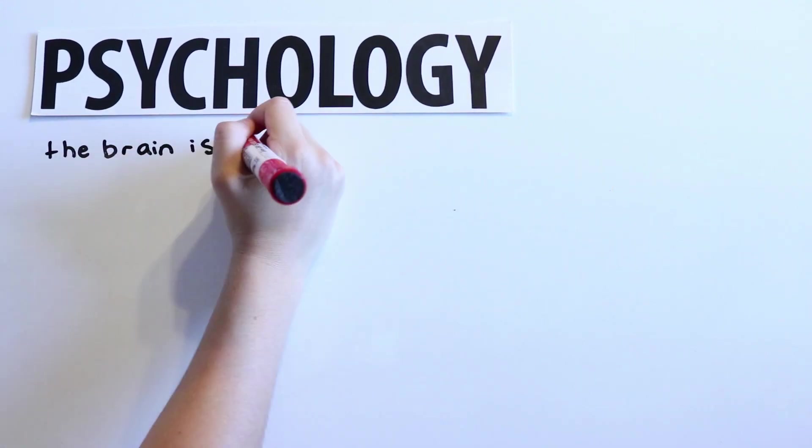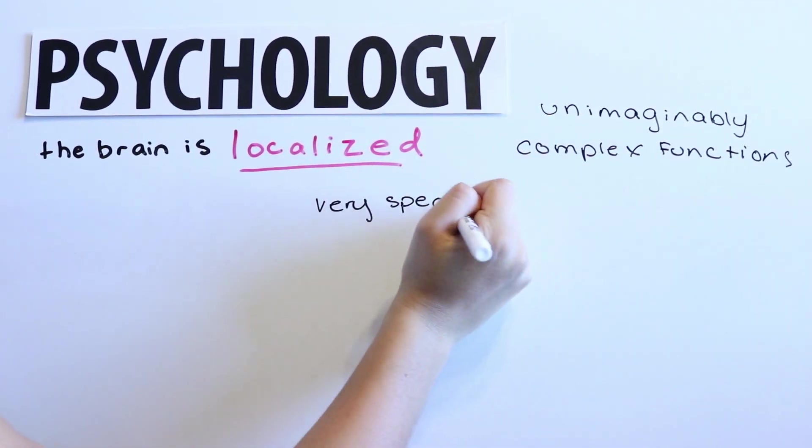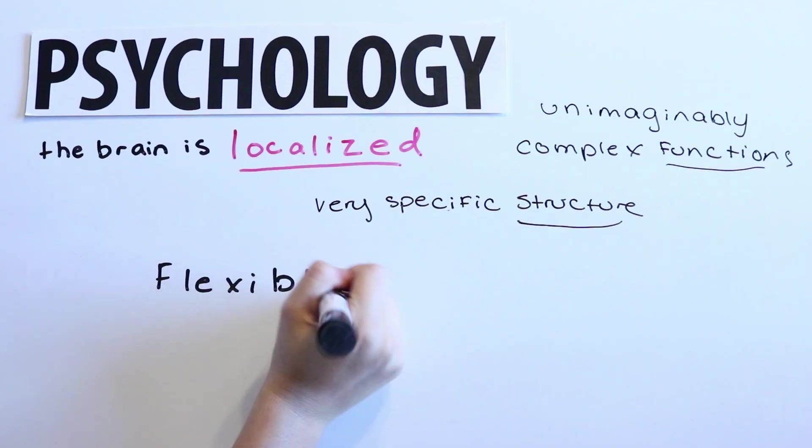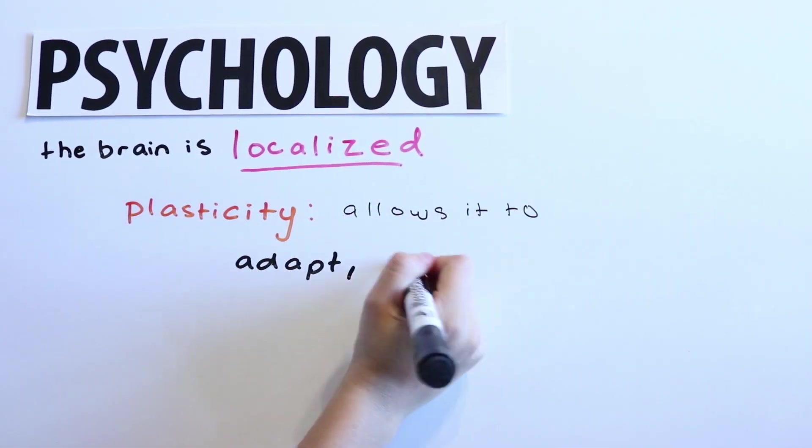And though, while because the brain is localized and has these unimaginably complex functions that come from its very specific structure, it's still somewhat flexible. The brain's plasticity is what allows it to adapt, grow, and heal itself.